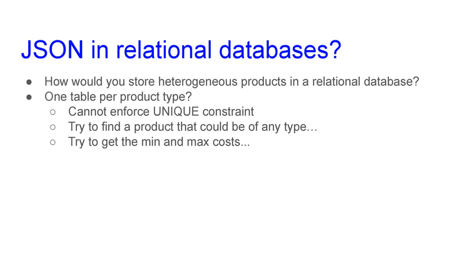A typical example is how to store a heterogeneous catalog of products in a relational database. There are some historical ways. A first solution would be to use a separate table for each product type — a table for shirts, a table for phones, and so on. But there are problems: you cannot enforce unique constraints across tables, products stored in different tables could have the same name, and it's difficult to find a product if you don't know which table it is stored in.